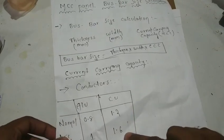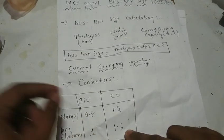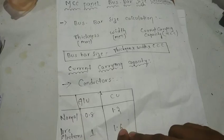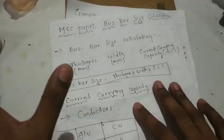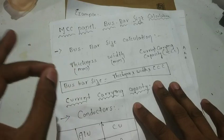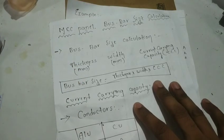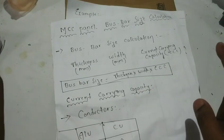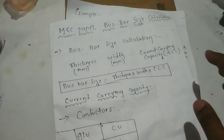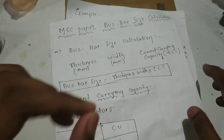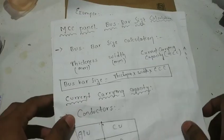If we use pure copper, the factor is 1.6. So if we use a bus bar - aluminium or copper - we use the thickness, width, and the conductor current carrying capacity factor. That is aluminium or copper as a base.